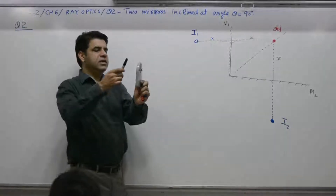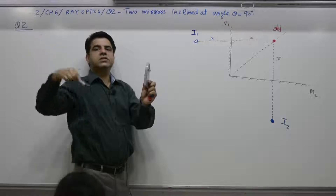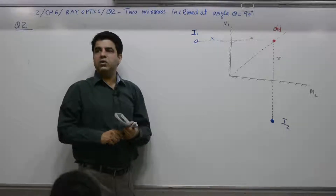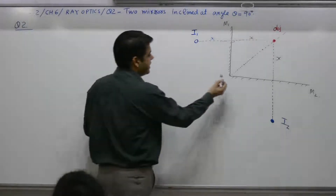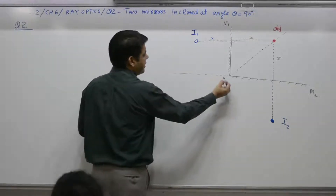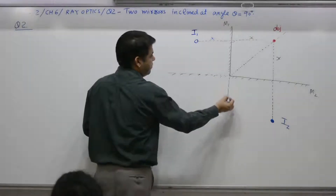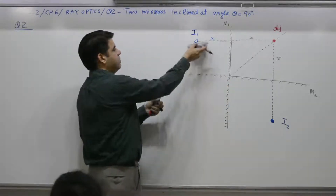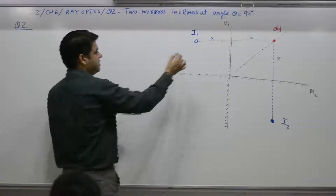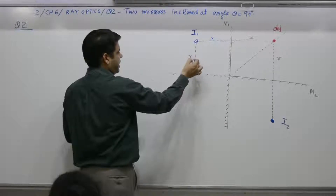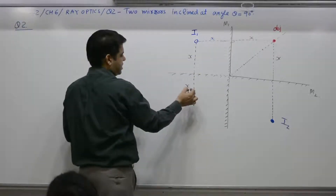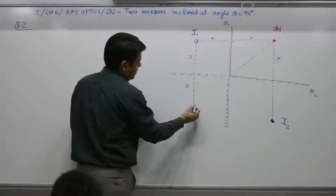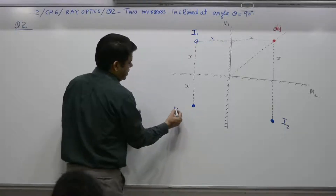Think of it this way — I can see a group of students through reflection, so extend mirror M2 to infinity and extend mirror M1 to infinity as well. Now I1 acts as an object. This distance from I1 to mirror M2 is x; take it further by distance x on the other side and you get the image of I1, which we call I1-dash.